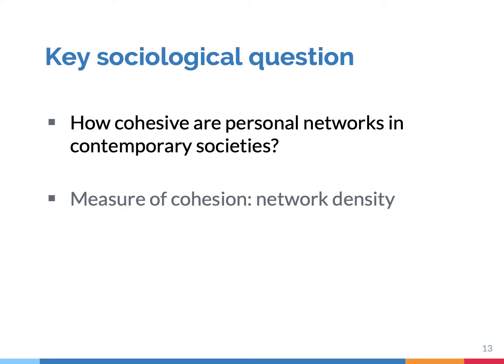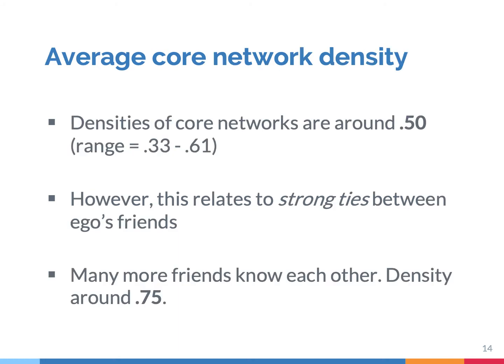So let's come back to our question: how cohesive are personal networks in contemporary societies? Sociological studies show that when you look at friendship networks, the density is around 0.5, meaning around 50% of our friends are also befriended with each other. But these are strong ties among our friends. When you look at whether they know each other more broadly, the density goes up to around 75%.